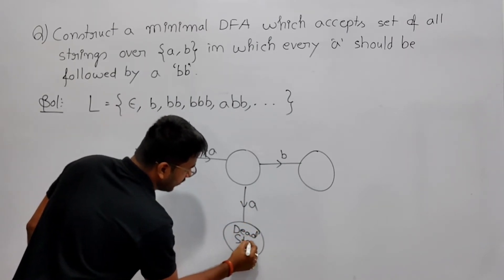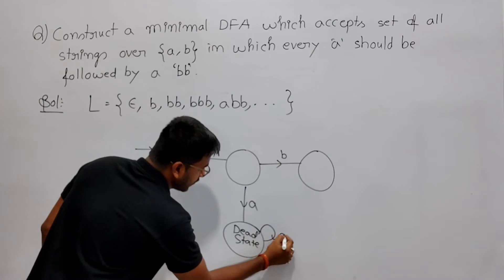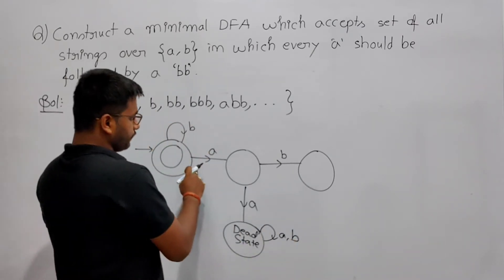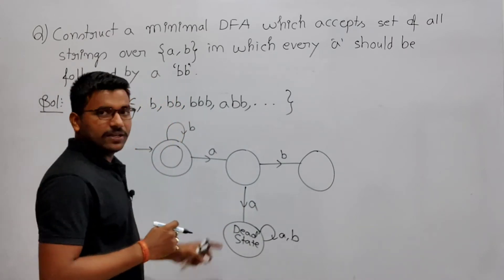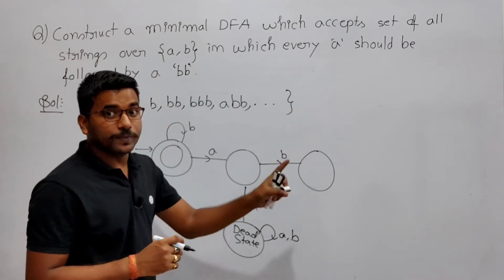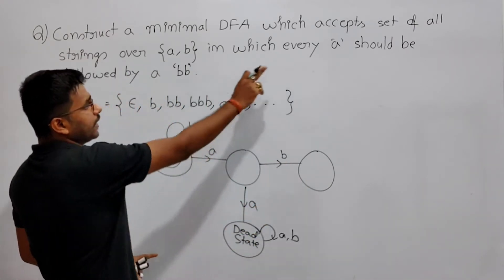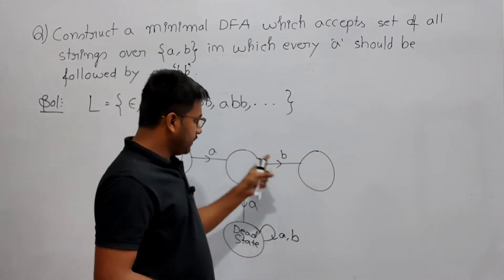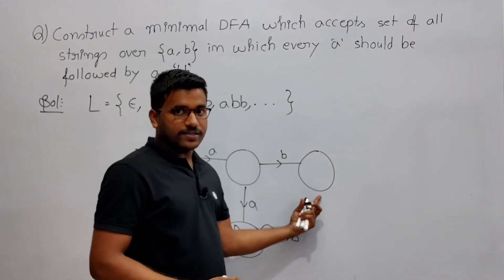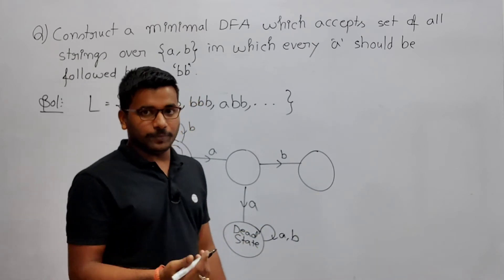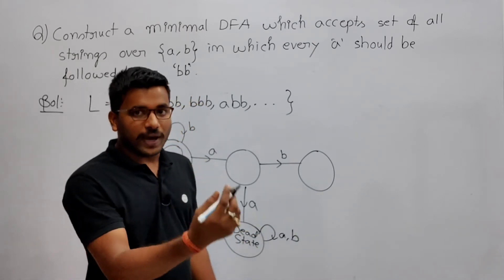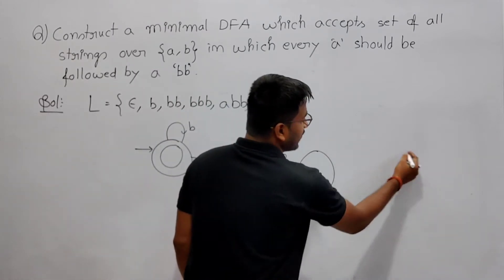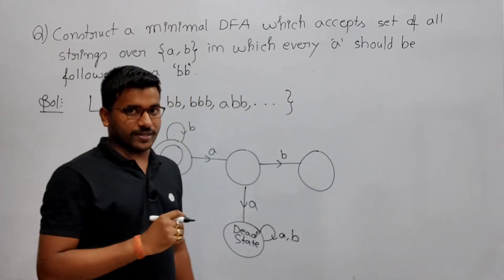Now after reaching the dead state, if you are getting any combination of A or B, you stay there. Now after A you got one B, then another B — by getting that second B you need to go to a final state.